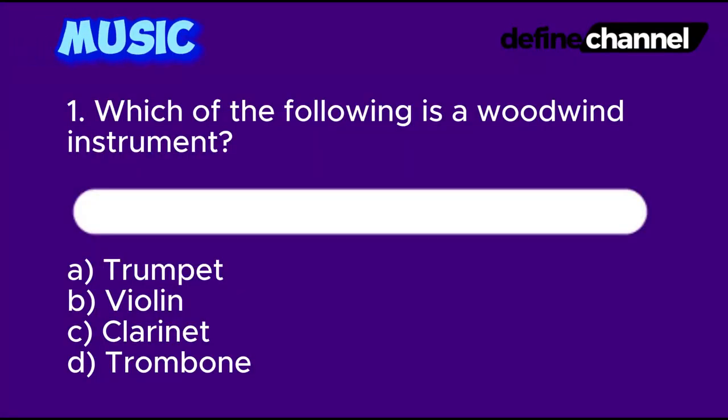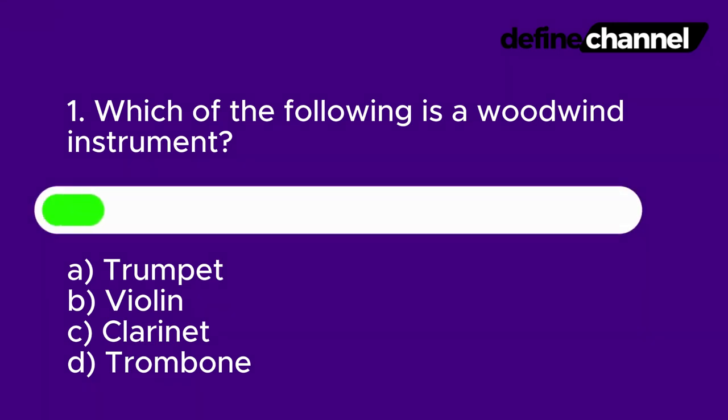Question 1: Which of the following is a woodwind instrument? A. Trumpet. B. Violin. C. Clarinet. D. Trombone. In 10 seconds, which do you think is the correct answer?